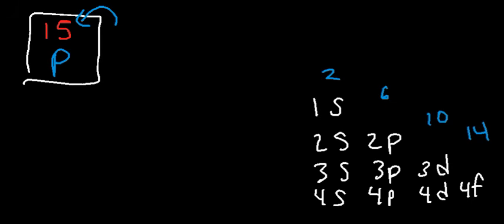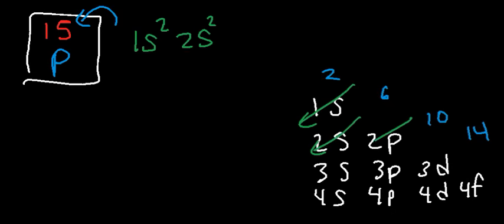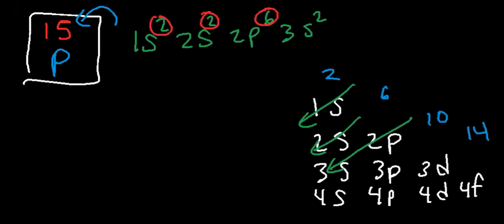S can hold up to two electrons, P can hold up to six, D can have up to 10, and F can have up to 14 — and we write until the exponents add up to 15. So: 1S2, 2S2, 2P6, 3S2 — that gives us 12 electrons. We only need three more, and 3P can hold up to six, but since we only need three more, we stop at 3P3. This is the electron configuration for phosphorus.